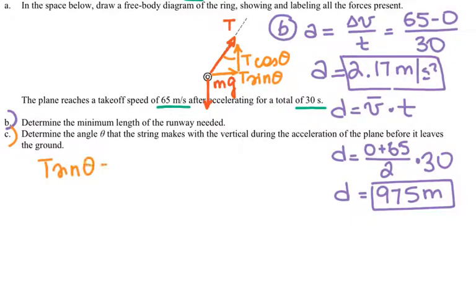T sine theta is equal to mass times acceleration, and acceleration is in this direction. The airplane accelerates in that direction when the ring is moving backward. T cosine theta minus mg is equal to zero because there's no vertical acceleration.